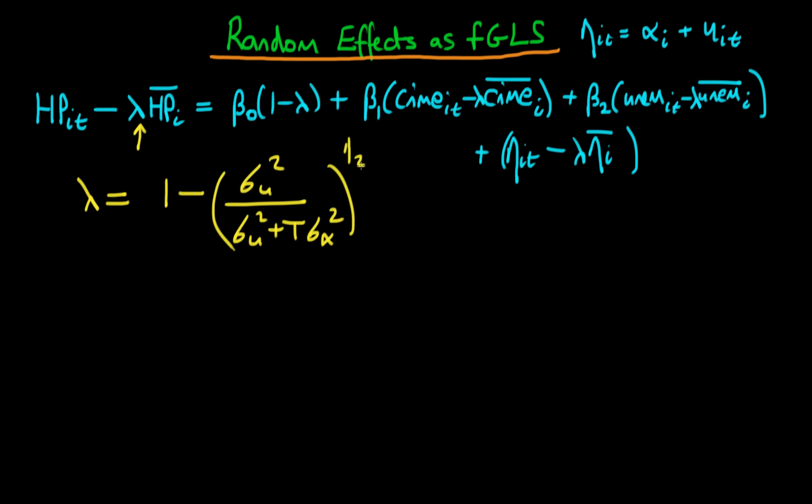In this particular expression for lambda, sigma mu refers to the variance of the error term U_it, and sigma alpha squared refers to the variance of the unobserved heterogeneity part of the error. So the error which we defined here is eta_it, which is the composite of both the unobserved heterogeneity and the idiosyncratic error.